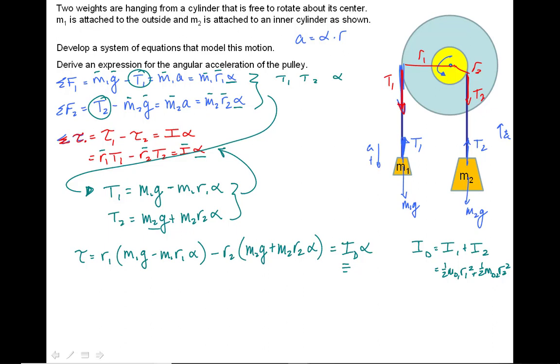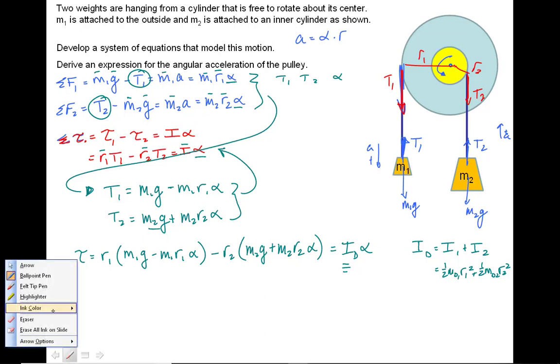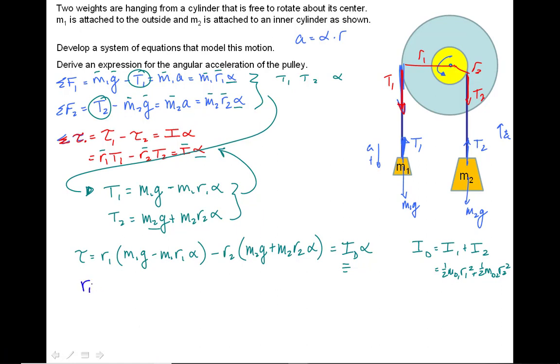So my last step is going to be a little bit of manipulation here. If I group all the alphas together with each other and bring them to one side and do a little manipulation, I believe it ends up looking something like, let's switch colors one more time, the answer being R1 M1 G minus R2 M2 G.